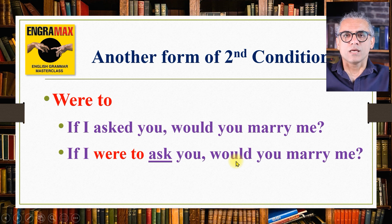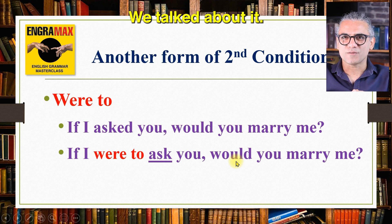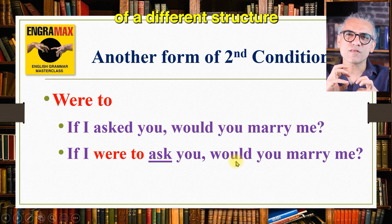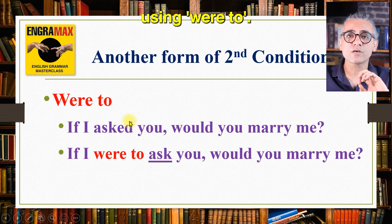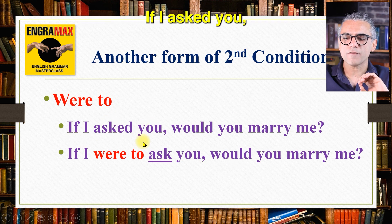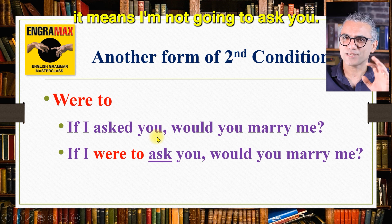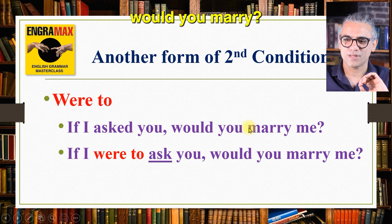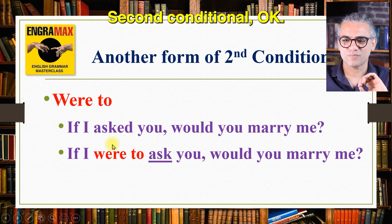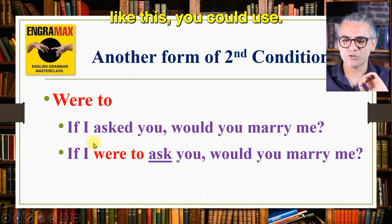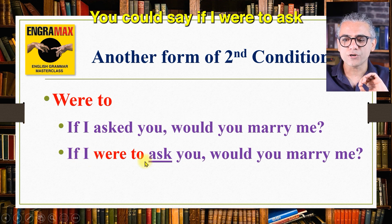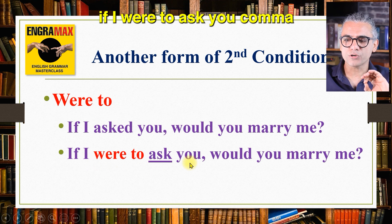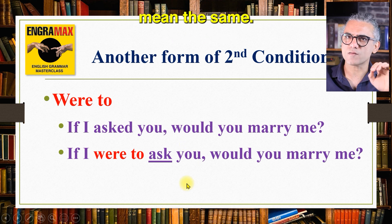You could also express the second conditional using a different structure: 'were to'. For example, instead of: if I asked you, would you marry me? — you could say: if I were to ask you, would you marry me? The verb after 'were to' comes in base form. These two sentences mean the same — it is just a different form of the second conditional.